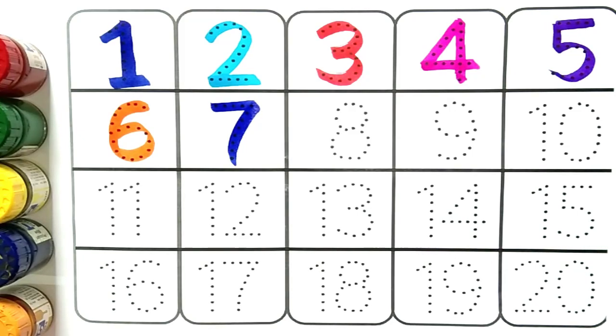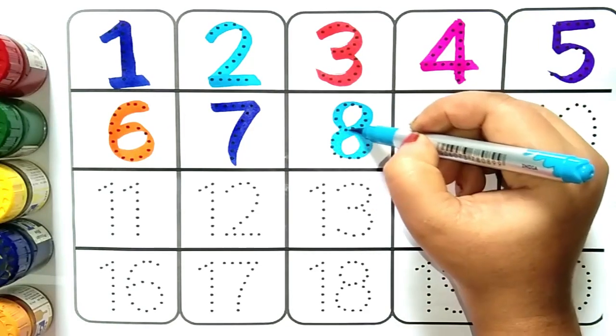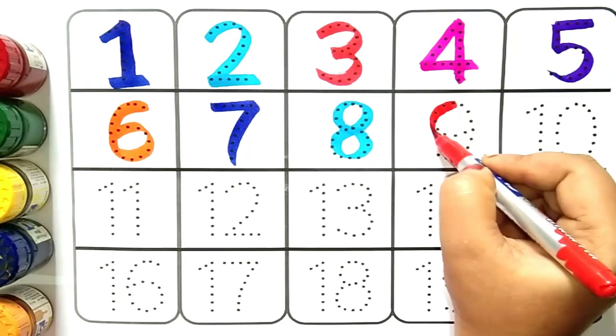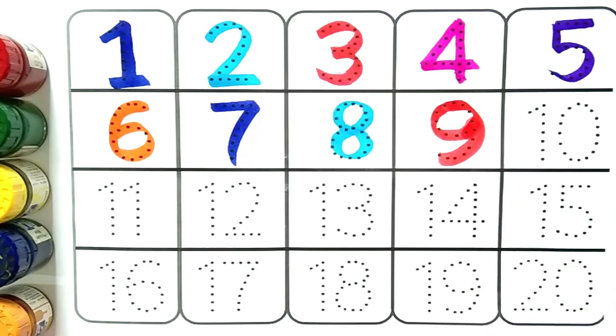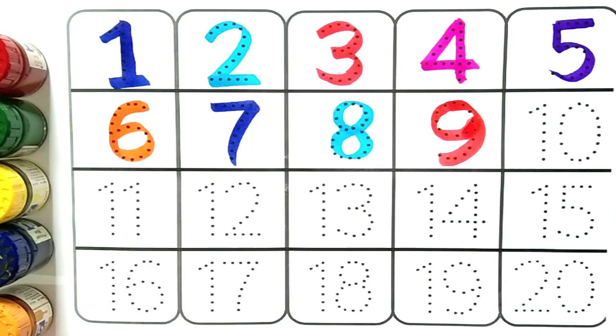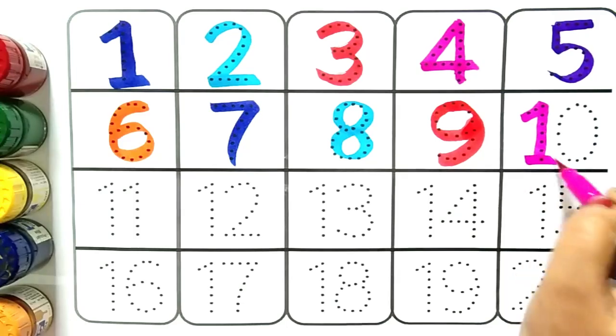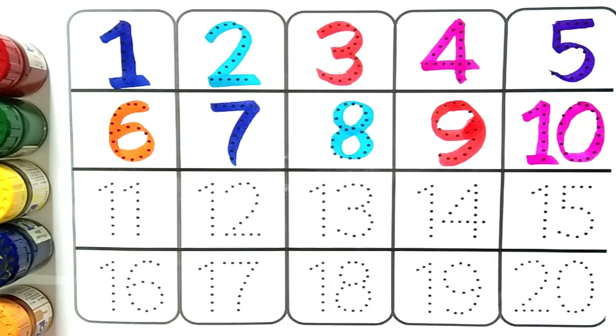After six comes seven. This is number seven. After seven comes eight. This is number eight. After eight comes nine. This is number nine. After nine comes ten. This is number ten. What is it kids? This is number ten.